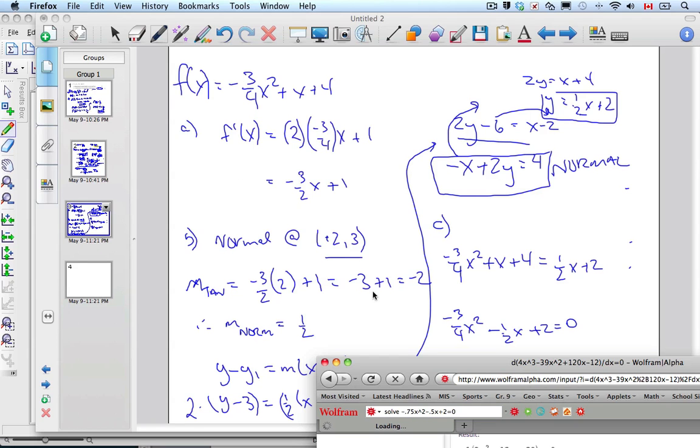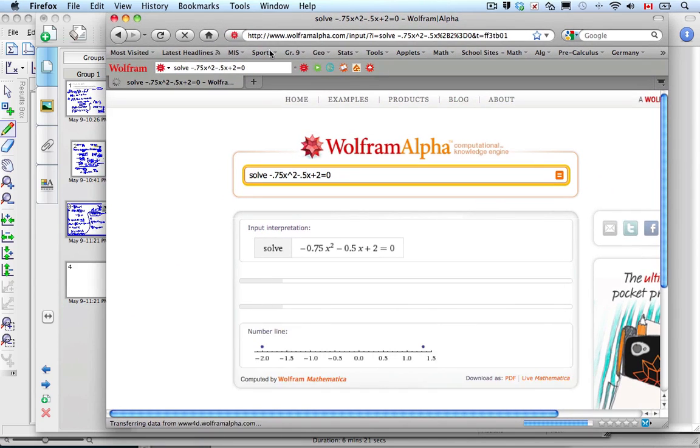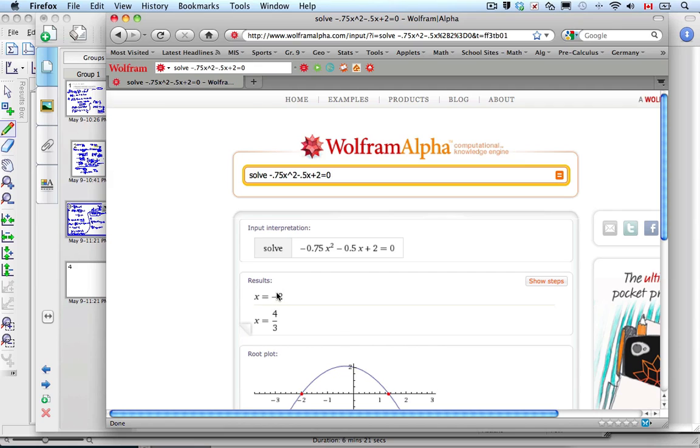That's what we're trying to solve. Our calculator will do this, or it will factor. Let's see what we get. We get negative 2 and 4 thirds.